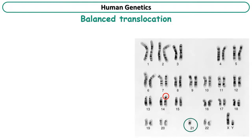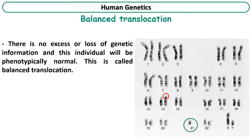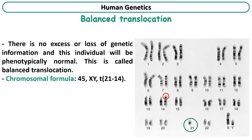Now let's examine the karyotype of this individual. He has one free chromosome 21 and a second one translocated to chromosome 14. So there is no excess or loss of genetic information, and this individual will be phenotypically normal. This is called balanced translocation. The chromosomal formula is written as follows: 45 chromosomes, which is the total number; XY, which are the sex chromosomes; and at the end, the translocation is mentioned.